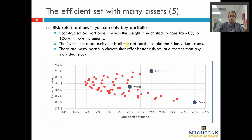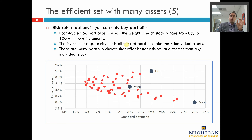There's roughly a two-thirds or 70% chance the Merck stock return is going to be minus 11.5% to 28.5% — that's one standard deviation either side of Merck's expected return of 8.5%. What happens if we form portfolios? I constructed 66 portfolios in which the weight in each individual stock ranges from 0% to 100% in 10% increments. For example, one portfolio has 0% in Nike, 10% in Merck, 90% in Boeing. Another might have 10% in Nike, 20% in Merck, and 70% in Boeing. I did that over and over again to construct 66 different portfolios. In this universe of just these three stocks, the red dots plus the three individual assets represent the investment opportunity set — all the individual assets and all the portfolios I could form in this theoretical small universe.